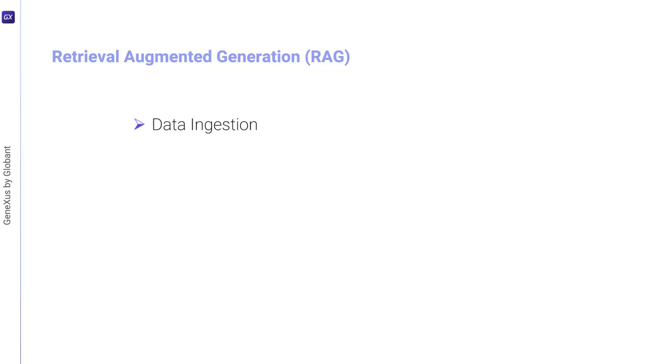This process consists of the following four phases. The first phase is data ingestion. It involves loading various types of documents in different formats and from multiple sources.